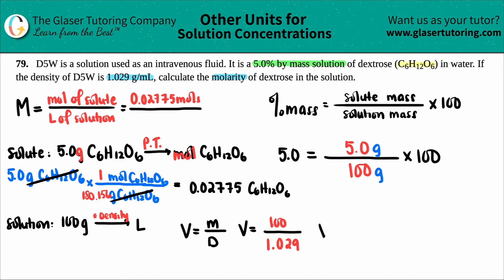So my volume equals my mass, which was 100, and then my density, which was 1.029. So 100 divided by 1.029, I get 97.18. Now question is, is this liters? Well, let's see. We got to go back to the density units. I put in a gram. I had grams. So what's going to come out? Oh, mils, not liters.